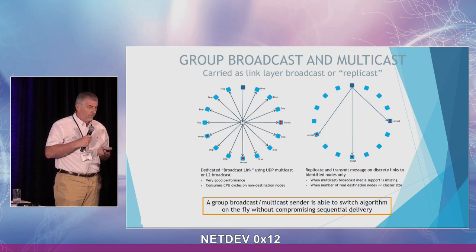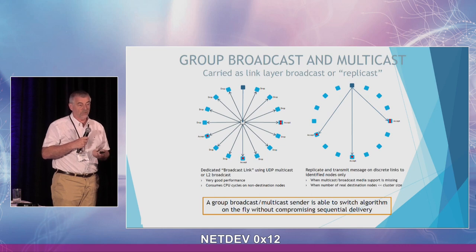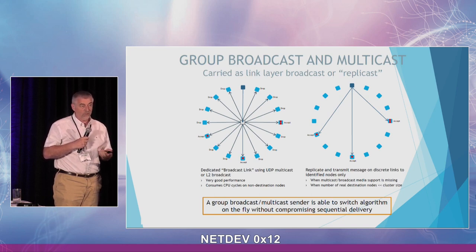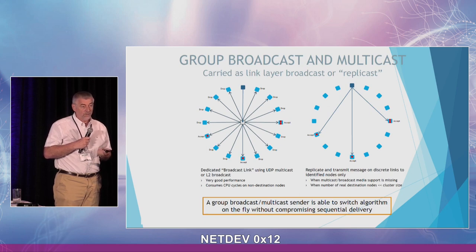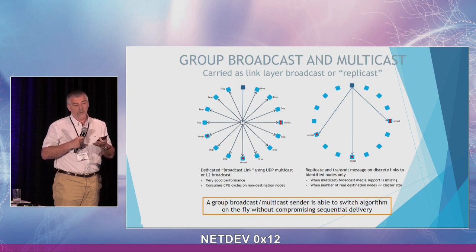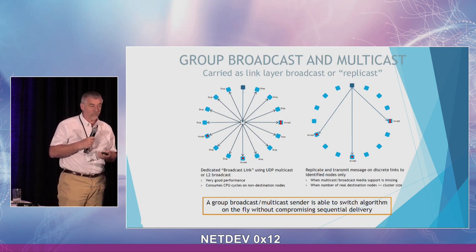There are two reasons for this optimization: perceived efficiency in bandwidth and CPU usage, and the fact that some infrastructures — such as cloud environments — simply don't allow multicast. However, a problem arises if a new member joining causes the algorithm to switch methods mid-stream, because messages then travel through different data paths with a risk of out-of-order delivery. We have addressed that problem.